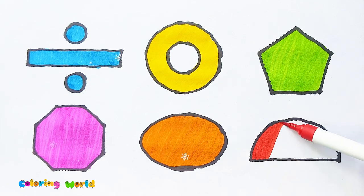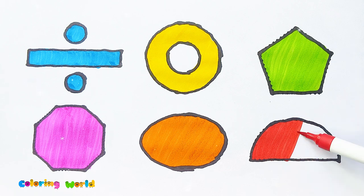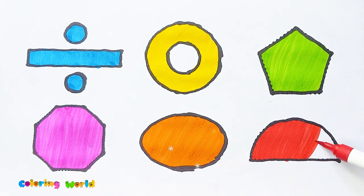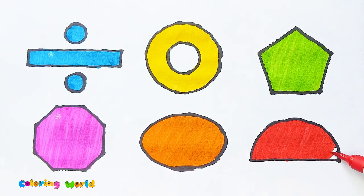Semicircle. Red, red color. Semicircle Shape of green and yellow.